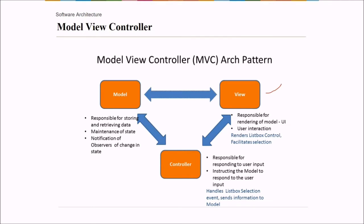As I said, the view, this is responsible for rendering the model, that is user interaction. And say you are rendering list box control, so it can facilitate you the selection. What about the model? So controller is responsible for responding to the user request. Say it is instructing the model to respond to the user input. For example, if you want to render the list box control, it handles the list box selection event and sends the information to the model. What is model doing here? Model is responsible for storing and rendering data. Say the maintenance of the state or notification of observers of change in the state. This is MVC architecture.